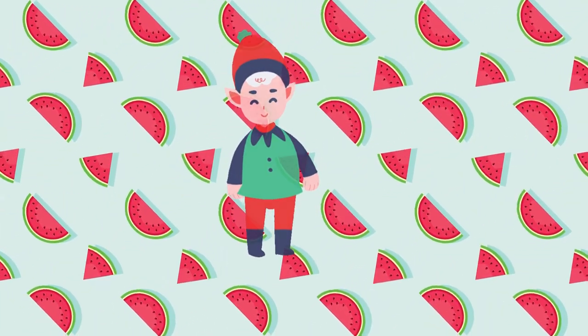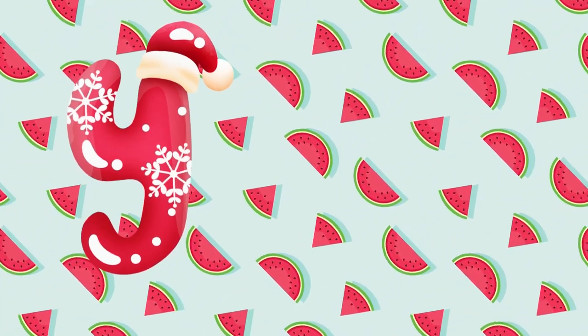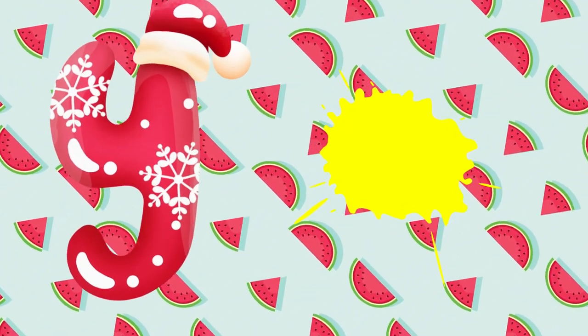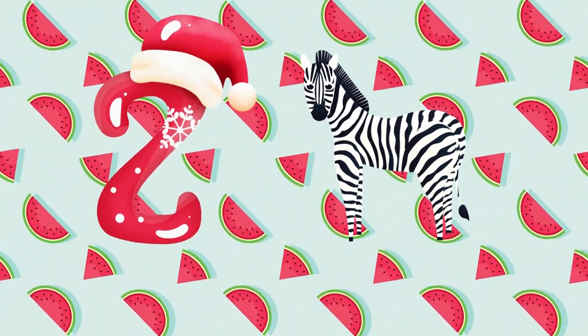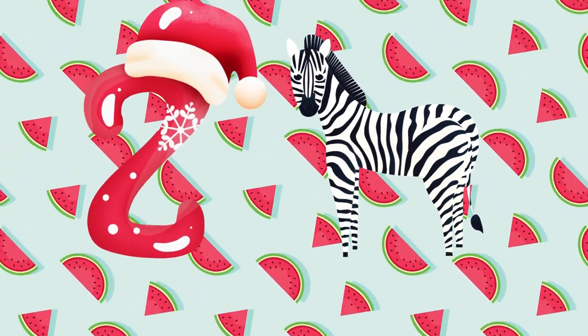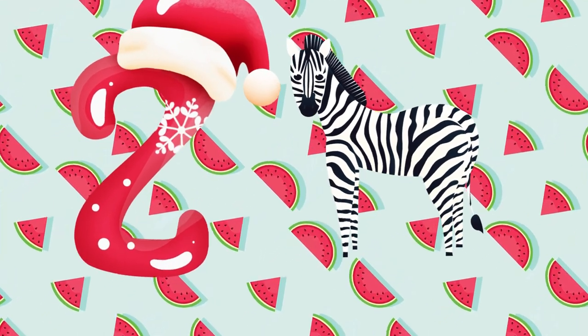Y is for yellow, ye-ye-yellow. Z is for zebra, z-z-zebra.